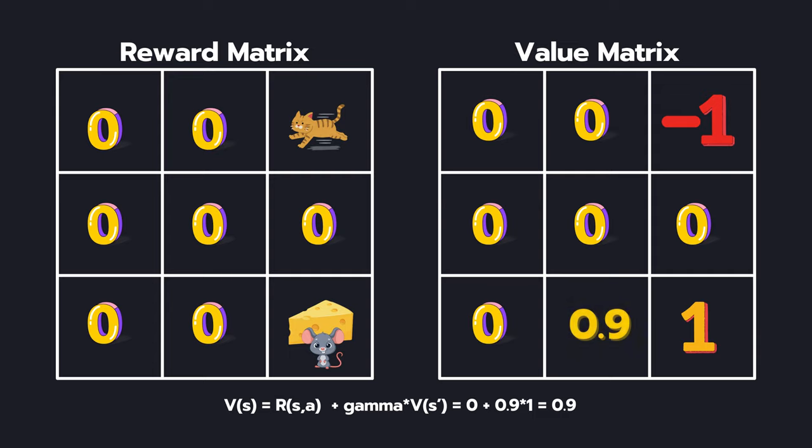Again, what if Jerry starts in the state of 2,0 which is the bottom left row? For him, the best action is to move right and then again towards the right towards the cheese. In this case, we can again use the Bellman equation to calculate the value for the state as V(2,0) which goes to R(s,a) plus gamma times the discounted value of the next state. We know that R(s,a) is 0 and gamma is 0.9.